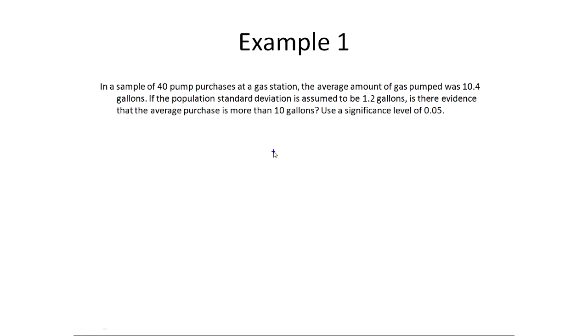This is an example we did before with the p-value method where we're trying to figure out if there's evidence that the average purchase is more than 10 gallons. So we're wondering is the mean more than 10 versus the assumption that the mean is equal to 10, which we write as the complement less than or equal to 10. Usually at this stage we do a p-value, but now instead, we're going to do the rejection region method.